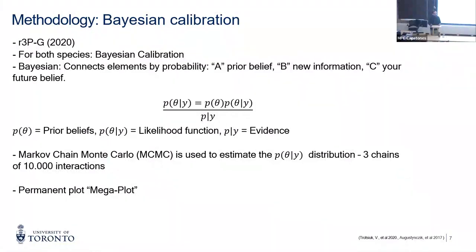Unfortunately, we can't just have the model and run it for maple and beech to see what happens — we need to calibrate it. For the calibration, we use the Bayesian methodology for both species separately. In simple terms, Bayesian connects elements by probability: we have our prior beliefs, we have new information, and then we have future beliefs. This uses a likelihood function, and inside the calibration we use the Markov Chain Monte Carlo to calculate this likelihood. We ran 10,000 iterations, three chains. To help with calibration, we used measurements from a permanent megaplot in Halliburton that has not been managed for 100 years, with measurements starting in 2009 every five years.